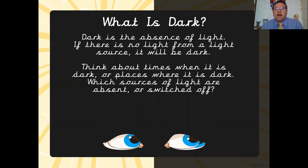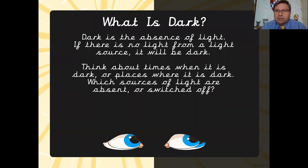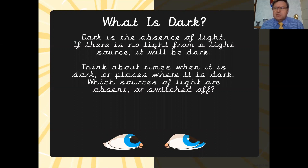So what's dark then? Dark is just an absence of light. When there is no light or light source, then obviously it's going to be dark. Think about the times when it's dark or places where it's dark - which light source is usually missing? For example, during the night, the light source that's missing is the sun, although you can actually see light bouncing off the moon. Some other stars create light as well - we can see those in the night sky. But what about other places in the dark? What's causing that to be dark? Where is the light source that's missing for those?